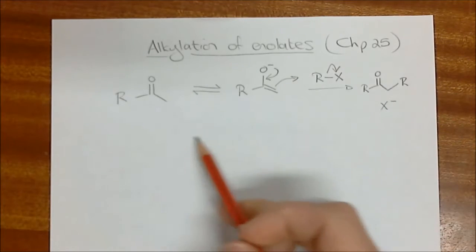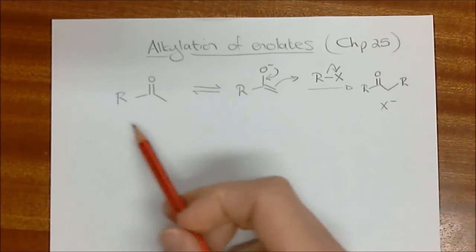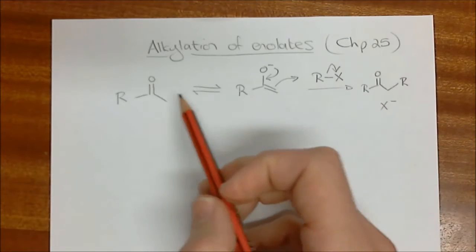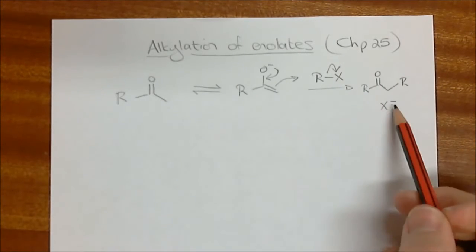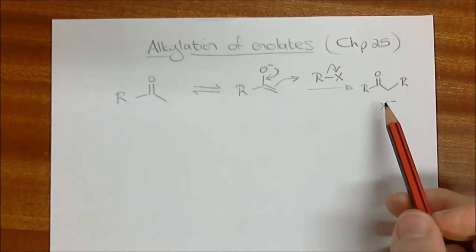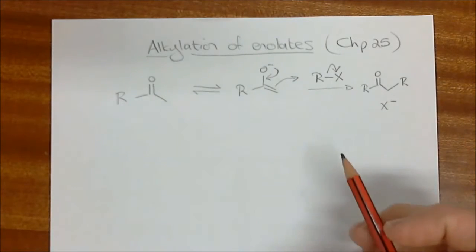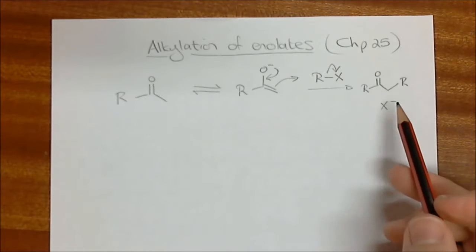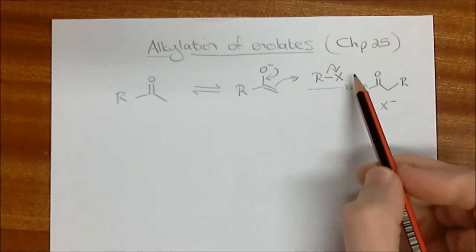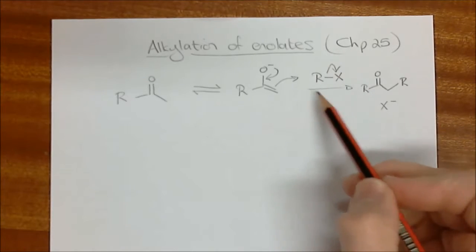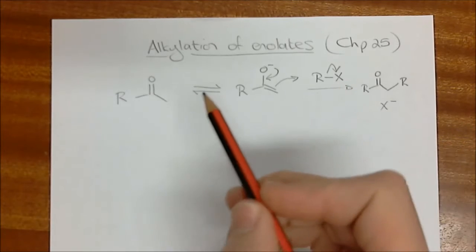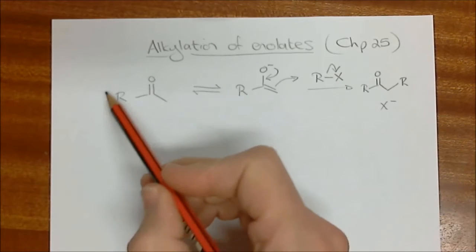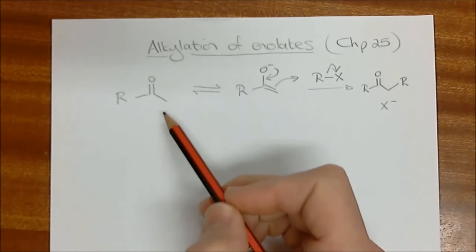In dealing with this, the whole of chapter 25 takes quite a bit of time to go over what is effectively this very simple reaction. And of course, the reason it takes so long is it's actually a little bit more complicated than what we've drawn over here, as we have to consider all the different options for alkylating agents.